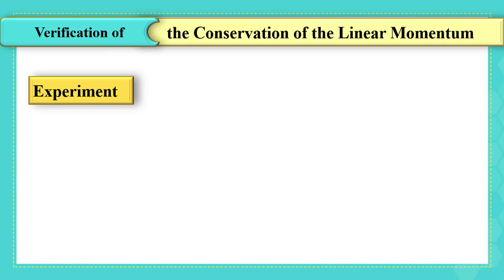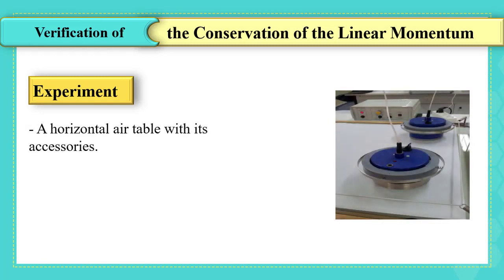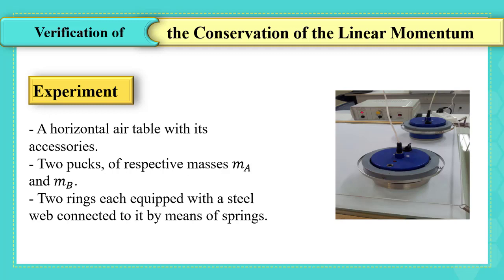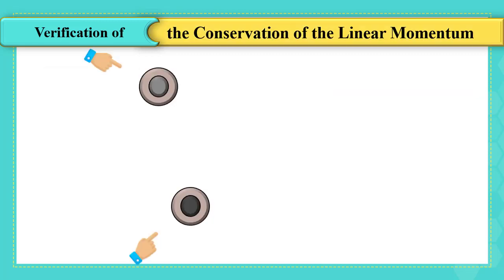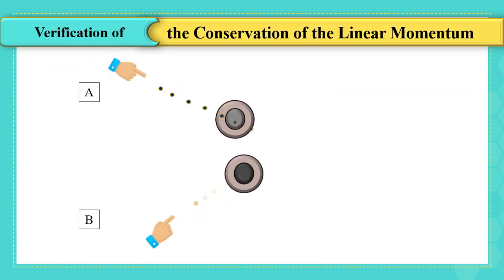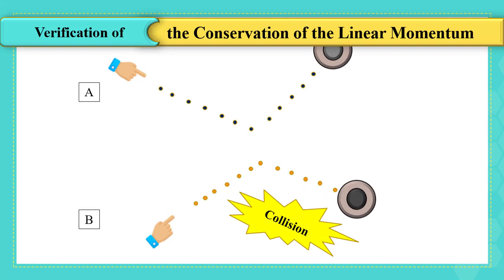First, we need a horizontal air table with its accessories, two pucks of respective masses mA and mB, two rings, each equipped with a steel web connected to it by means of springs. We push the two pucks initially placed on the horizontal air table towards each other with non-collinear velocities.